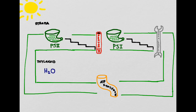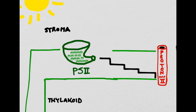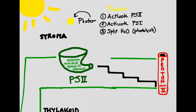The entire process is kicked off by a photon of light coming from the sun. Photons are going to do three separate things during the light-dependent reactions. Number one, activate PS2. Number two, activate PS1. And number three, they're going to cause a process called photolysis, where water splits into multiple pieces. We're going to start by talking about number one, where photons activate PS2.